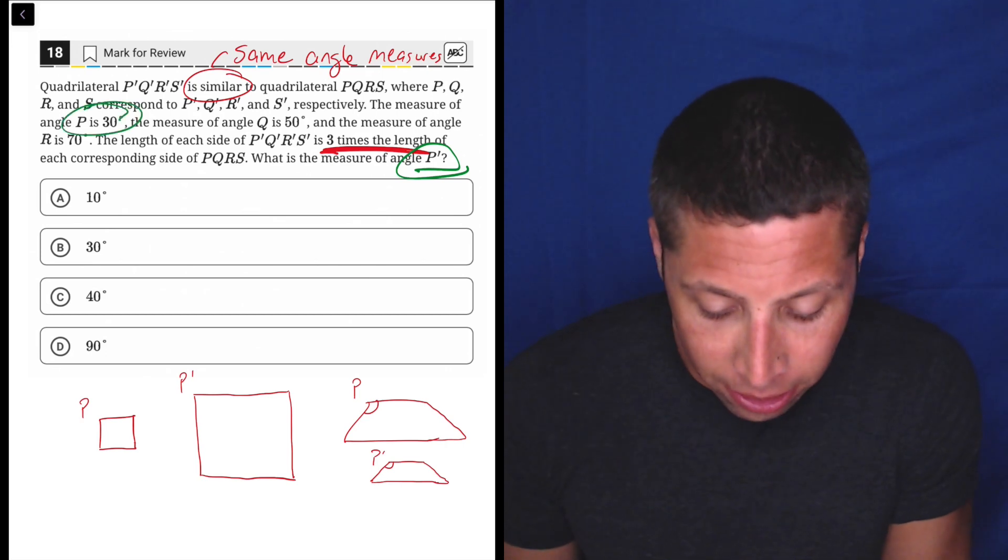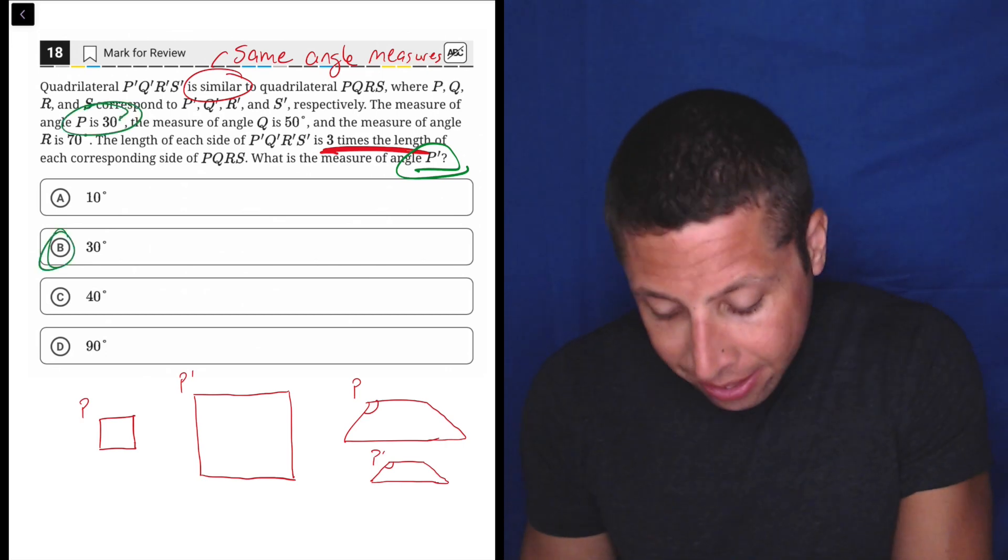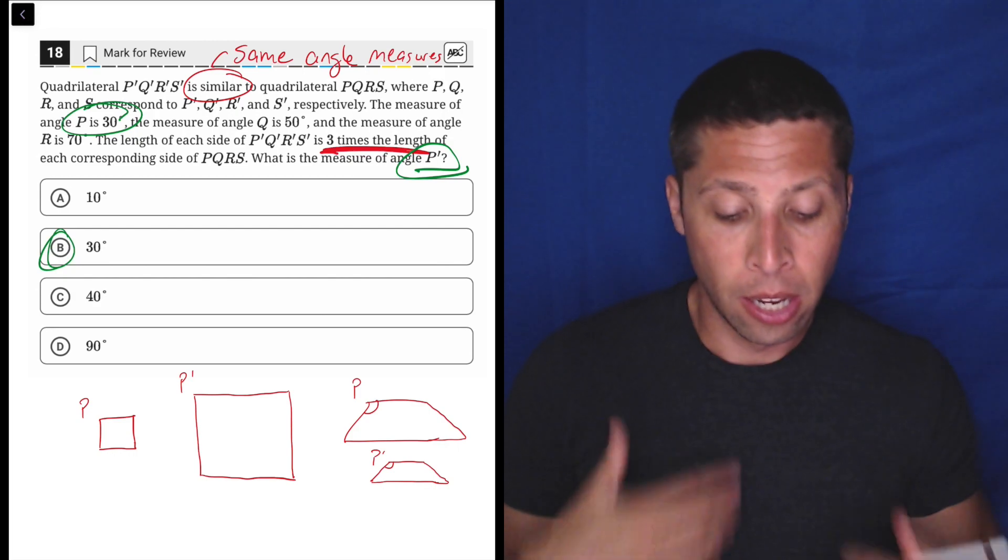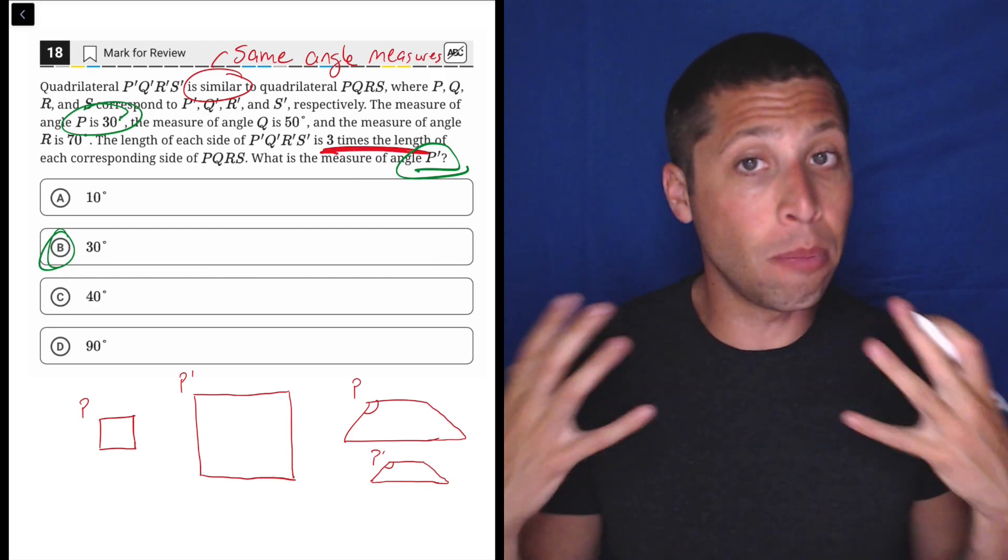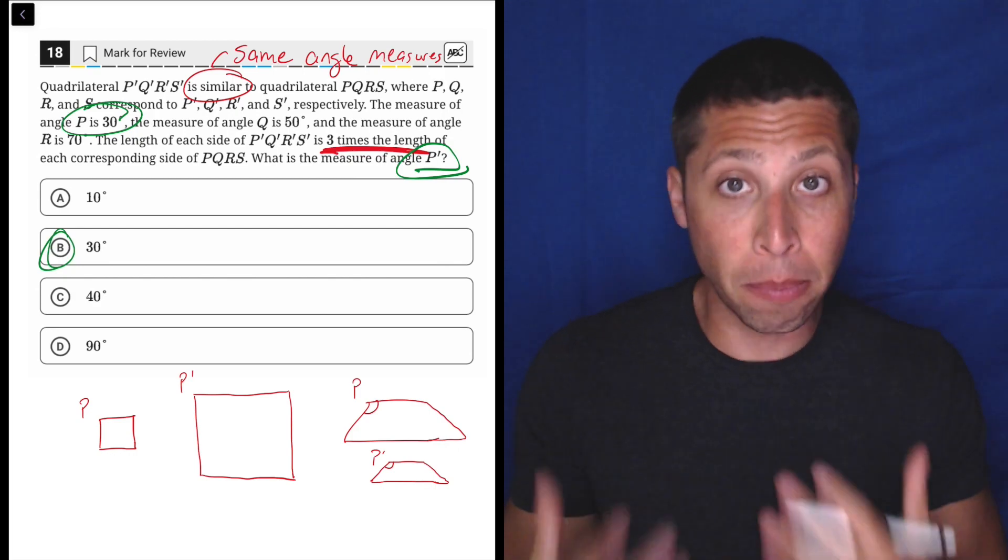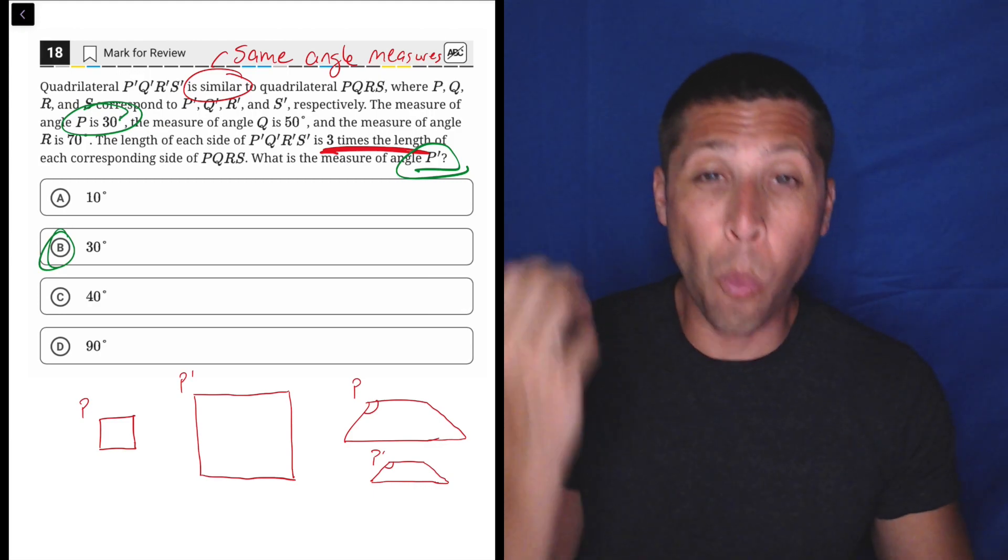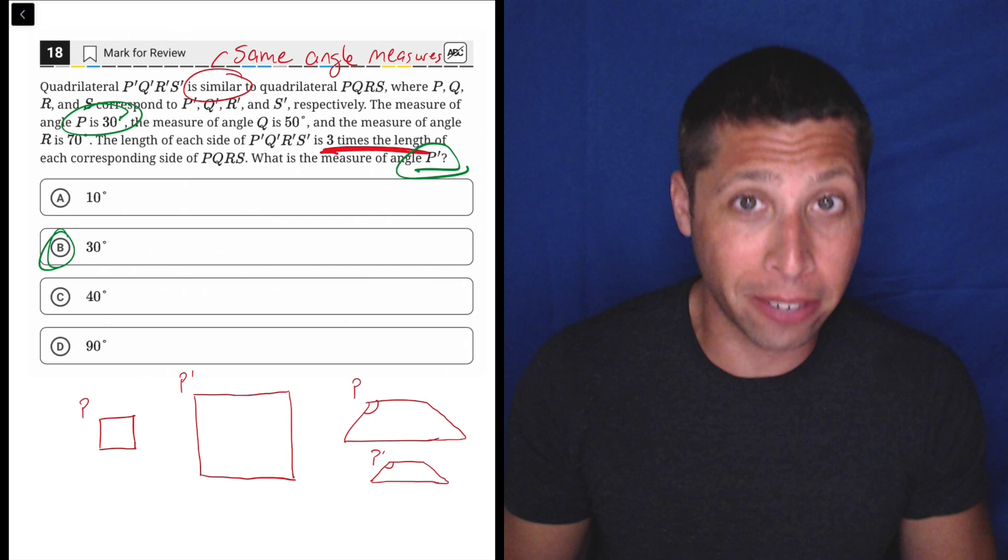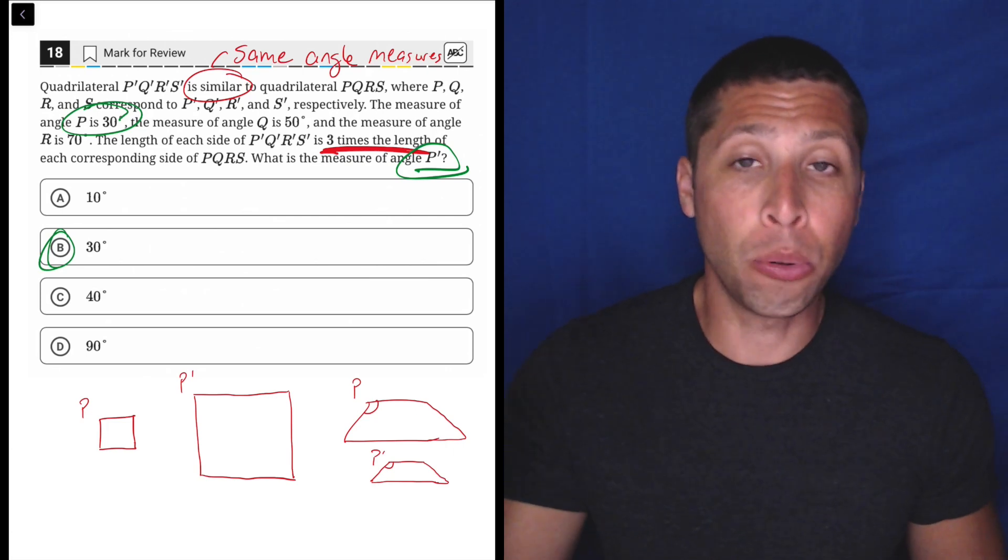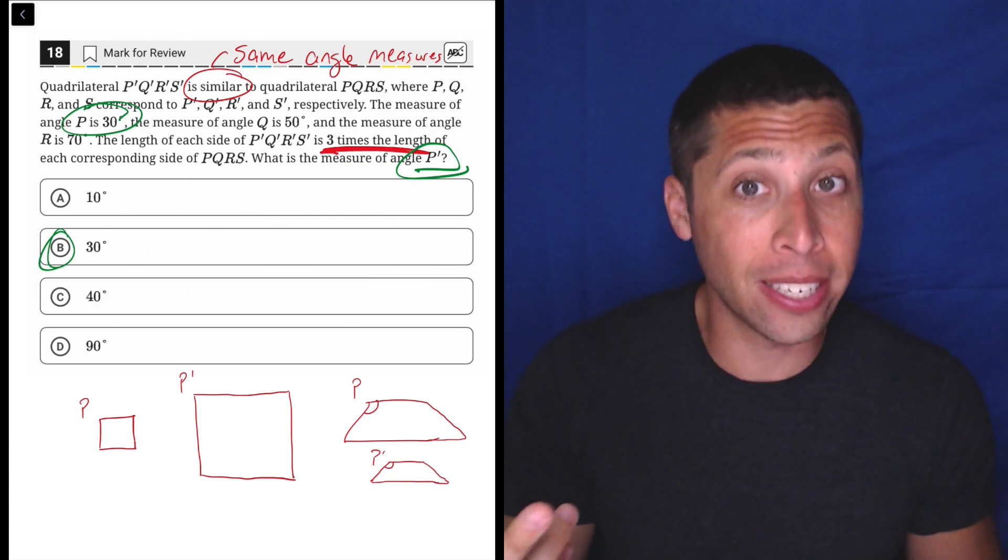So when they ask us for the angle measure of P prime, they tell us earlier that P is 30. That's it. There's no math to be done here, which is why a lot of questions that seem really dense, you just got to be careful. Sometimes they might have a lot of steps, but other times it's just that one word, one vocabulary word that matters.